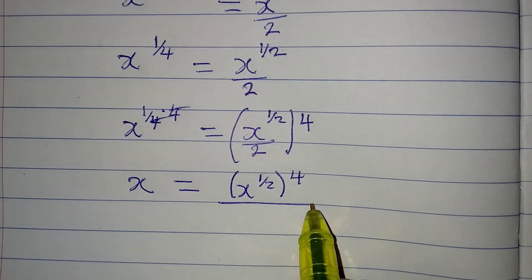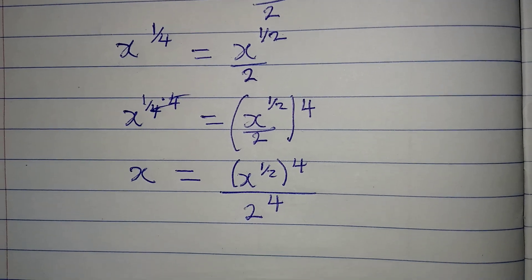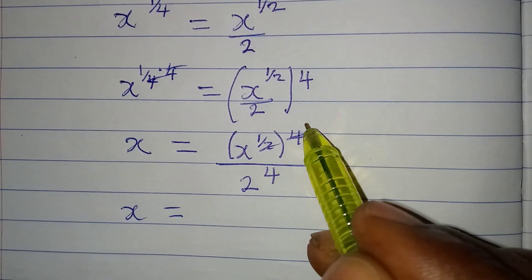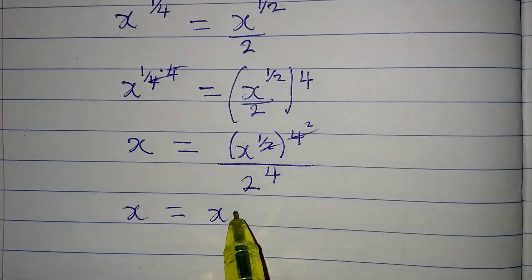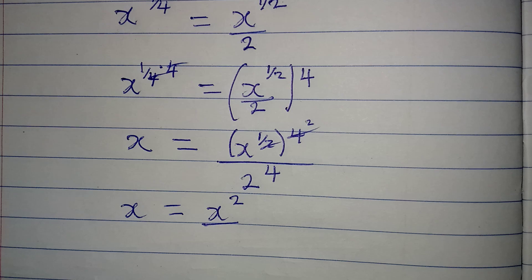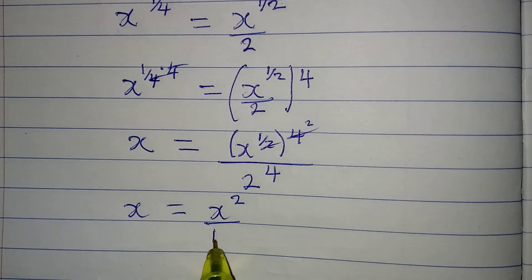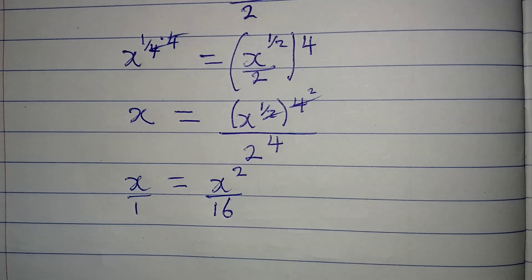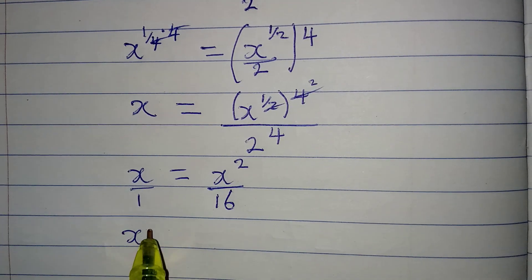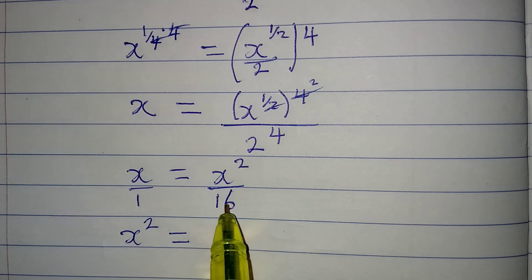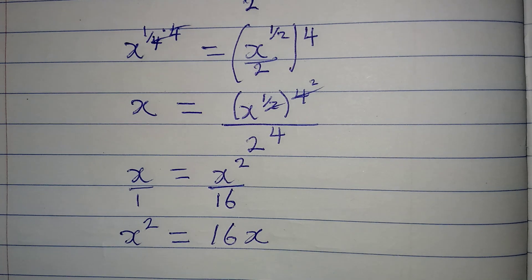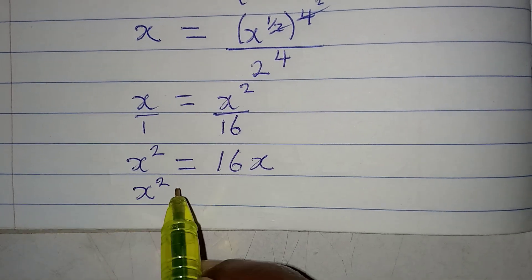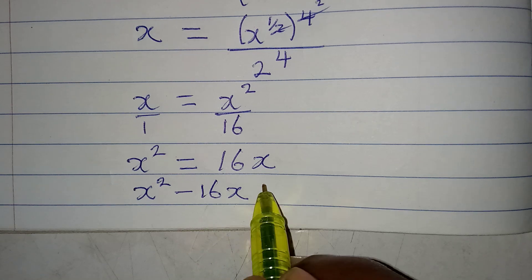From here, x equals x to the power of — since 2 can go into 4 twice — x squared, all over 2 to the power of 4. And 2 to the power of 4 gives us 16. At this point we cross-multiply: x squared times 1 gives us x squared, and this equals 16 times x, which is 16x. Now we have a quadratic equation. Bringing everything to the left: x squared minus 16x equals 0.